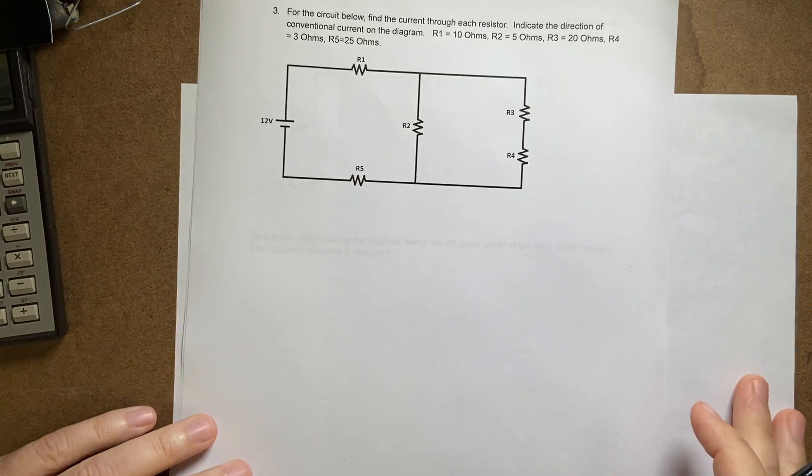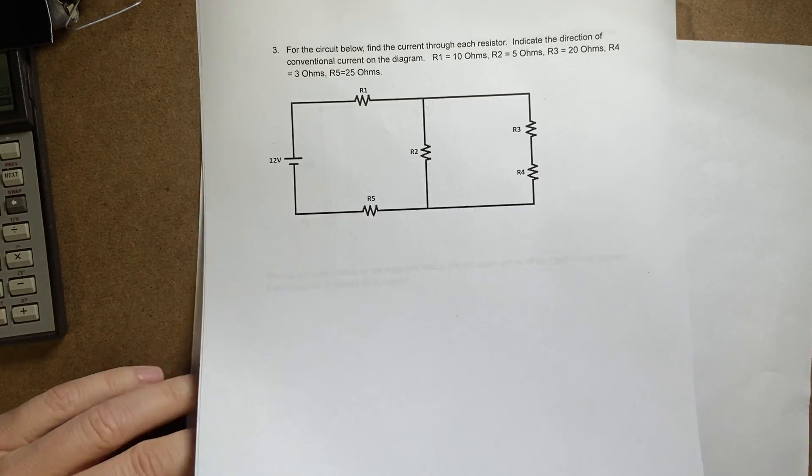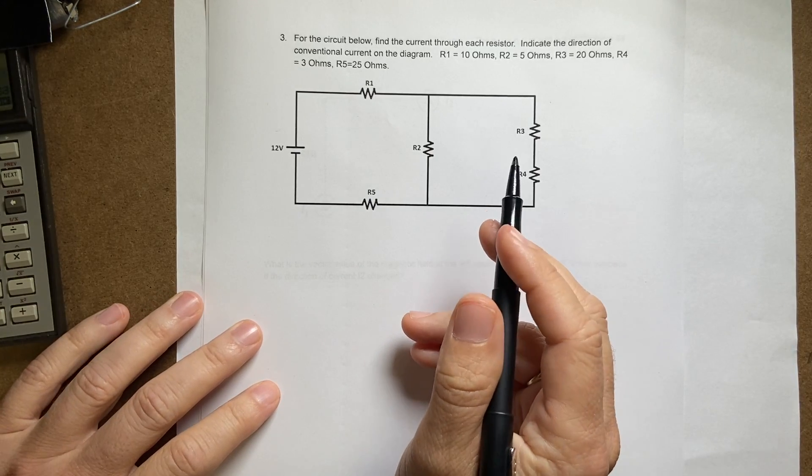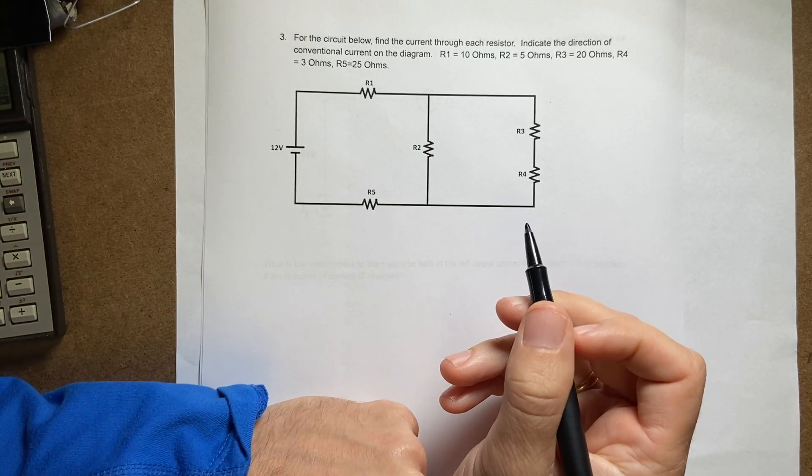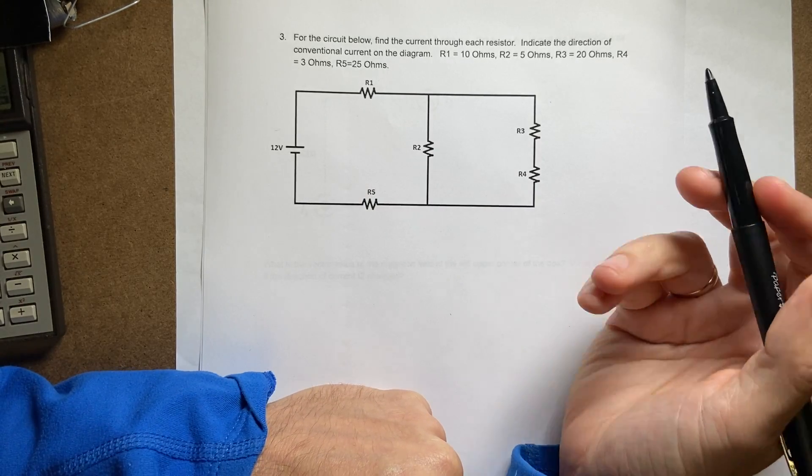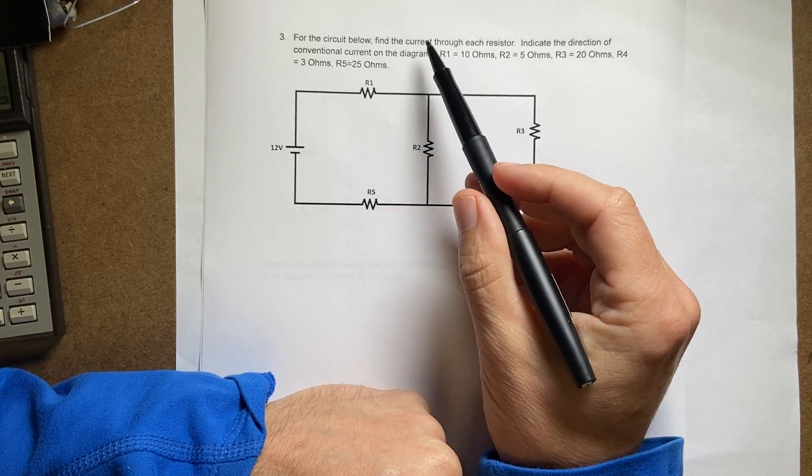Okay, I'm continuing to work on my final exam solutions for my algebra-based physics course part two, the second semester. Here is a circuit question, and I don't remember this question. So circuit below, find the current through each resistor, indicate the direction of the conventional current on the diagram.